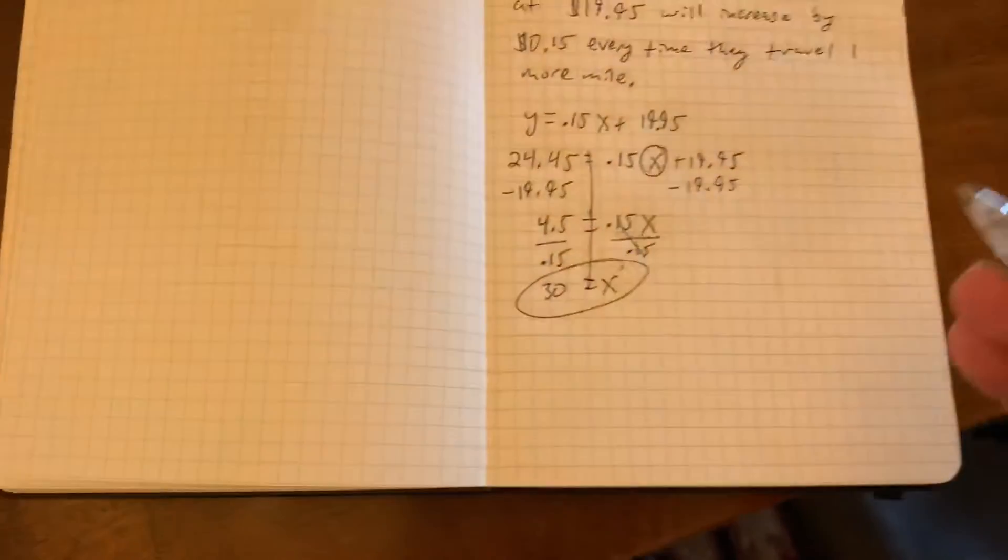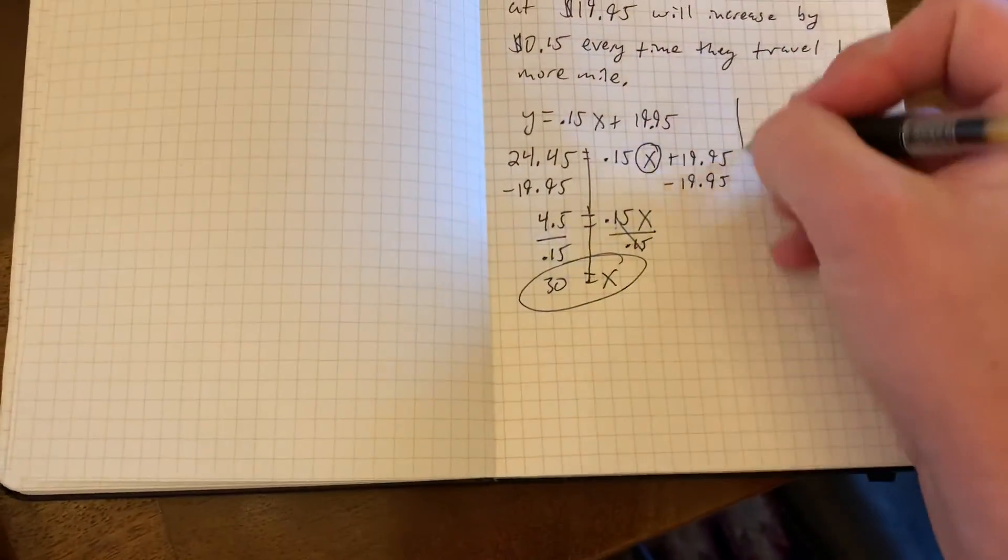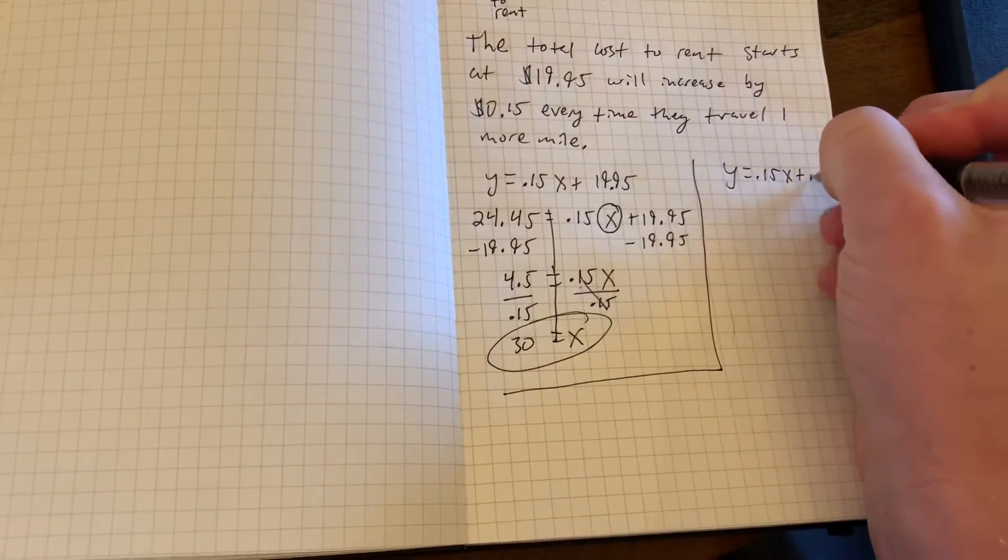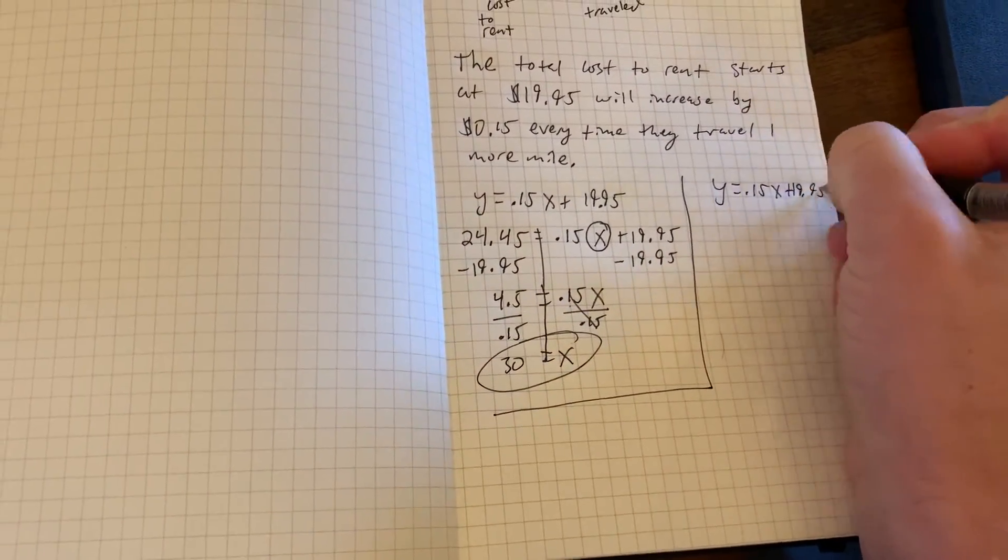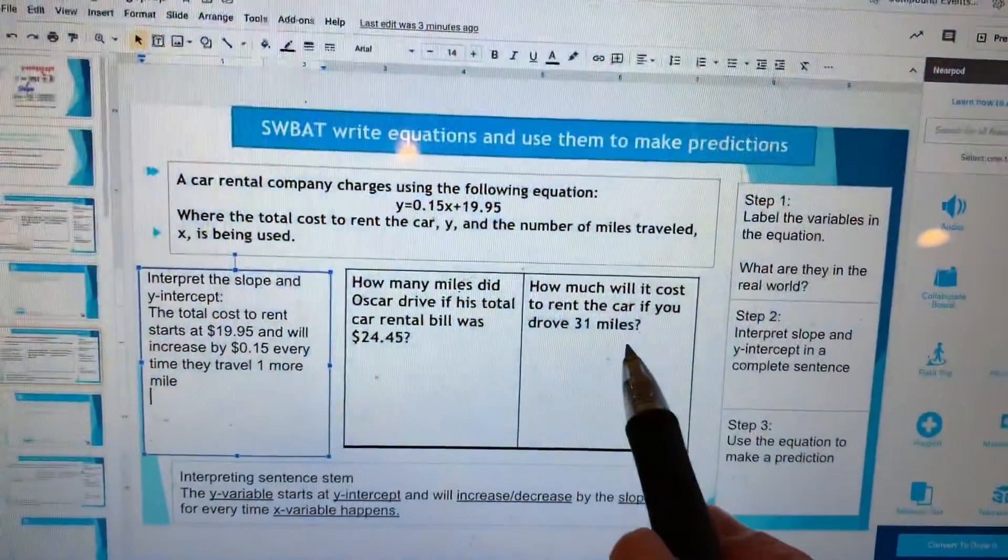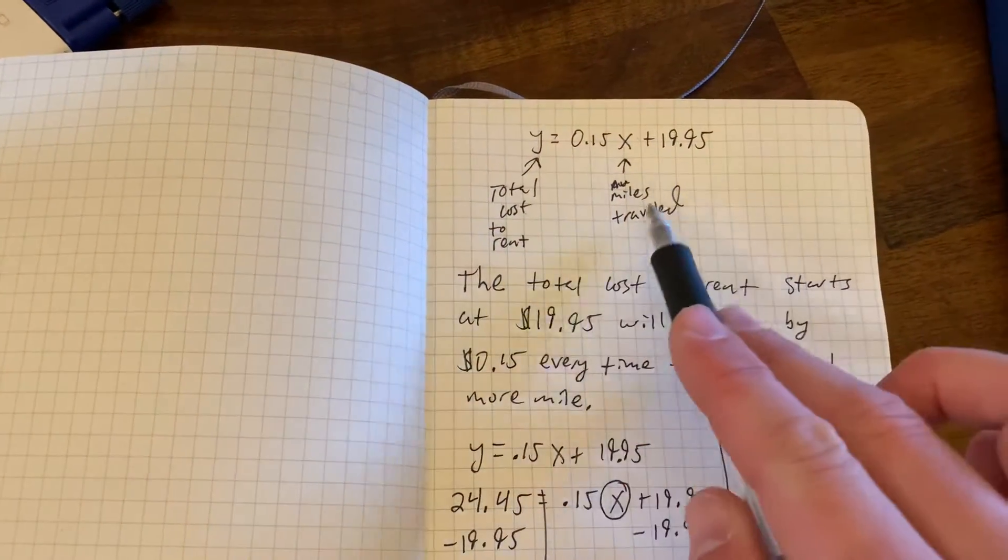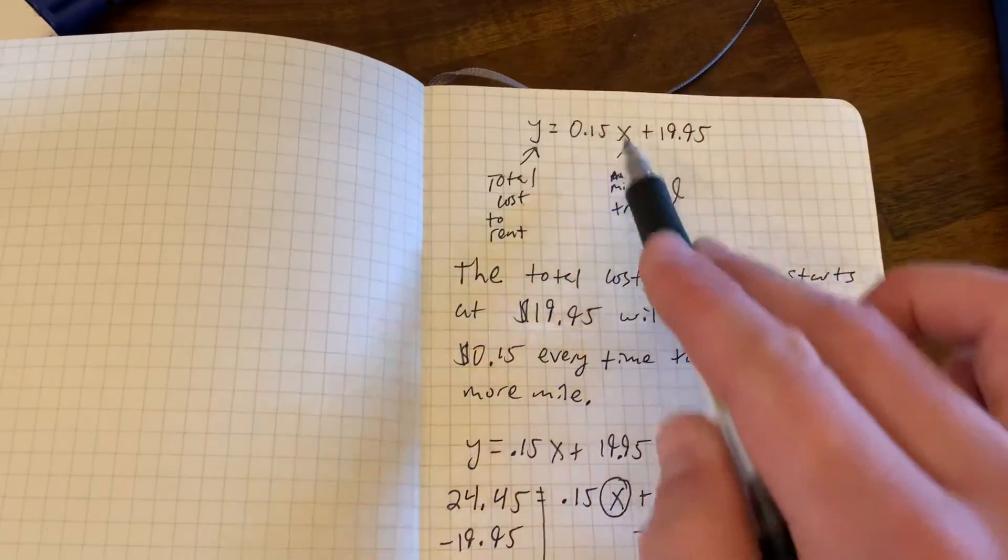So before I even get started, I'm just going to write down that, box off my other problem and jot down the same equation again. And now, let's see. How much will it cost to rent for 31 miles? 31 is not a cost. 31 in this problem was miles, which went with X.